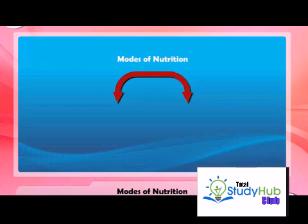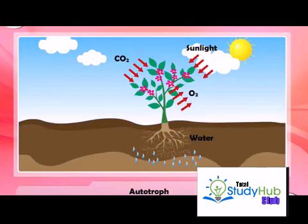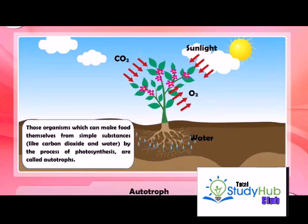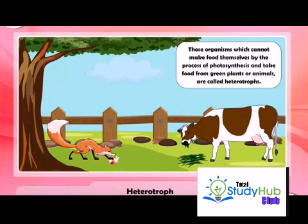Modes of nutrition: all organisms can be divided into two main groups — autotrophs and heterotrophs. Autotrophs are those organisms which can make food themselves from simple substances like carbon dioxide and water by the process of photosynthesis. Their mode of nutrition is called autotrophic. For example, green plants.